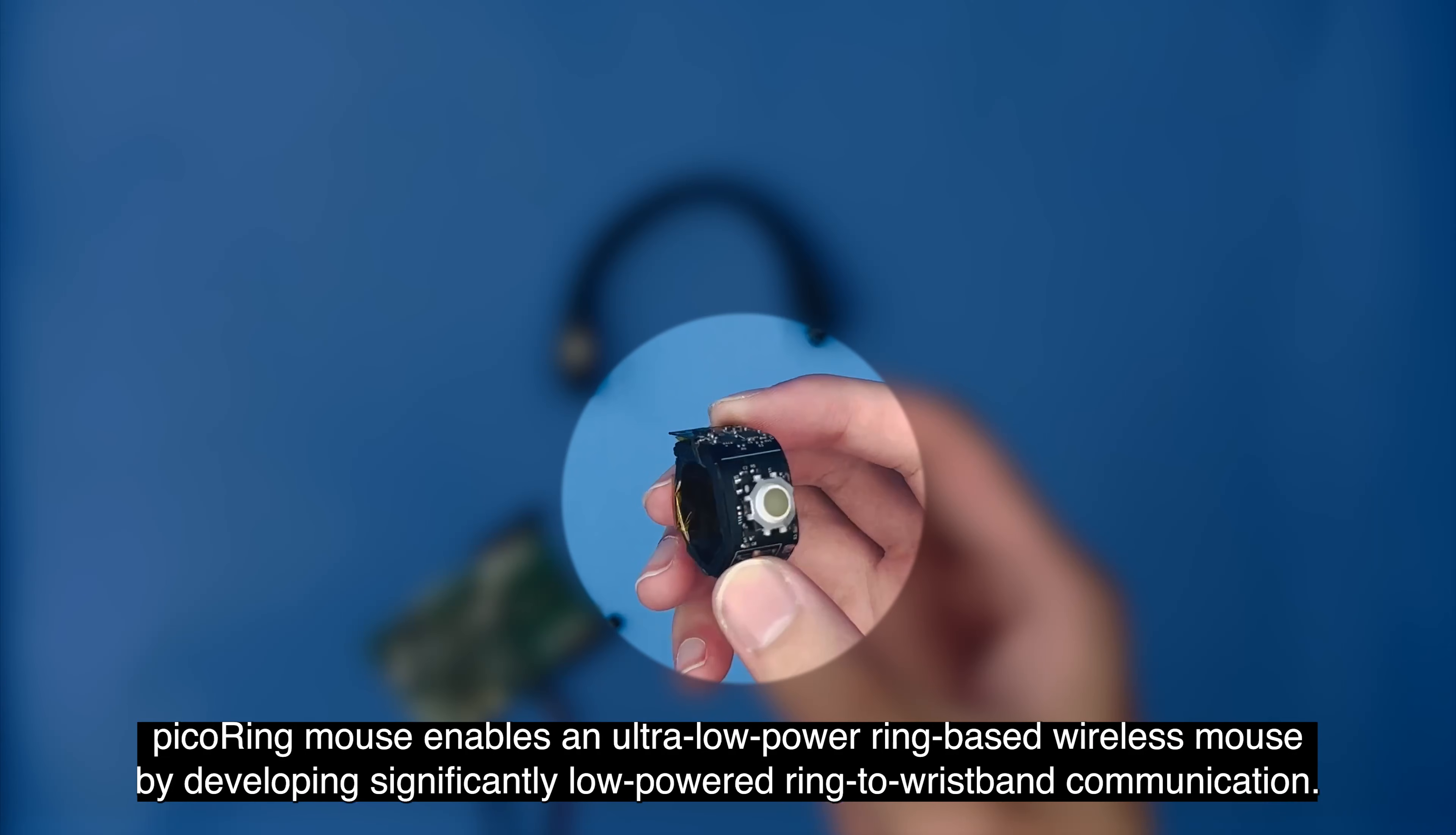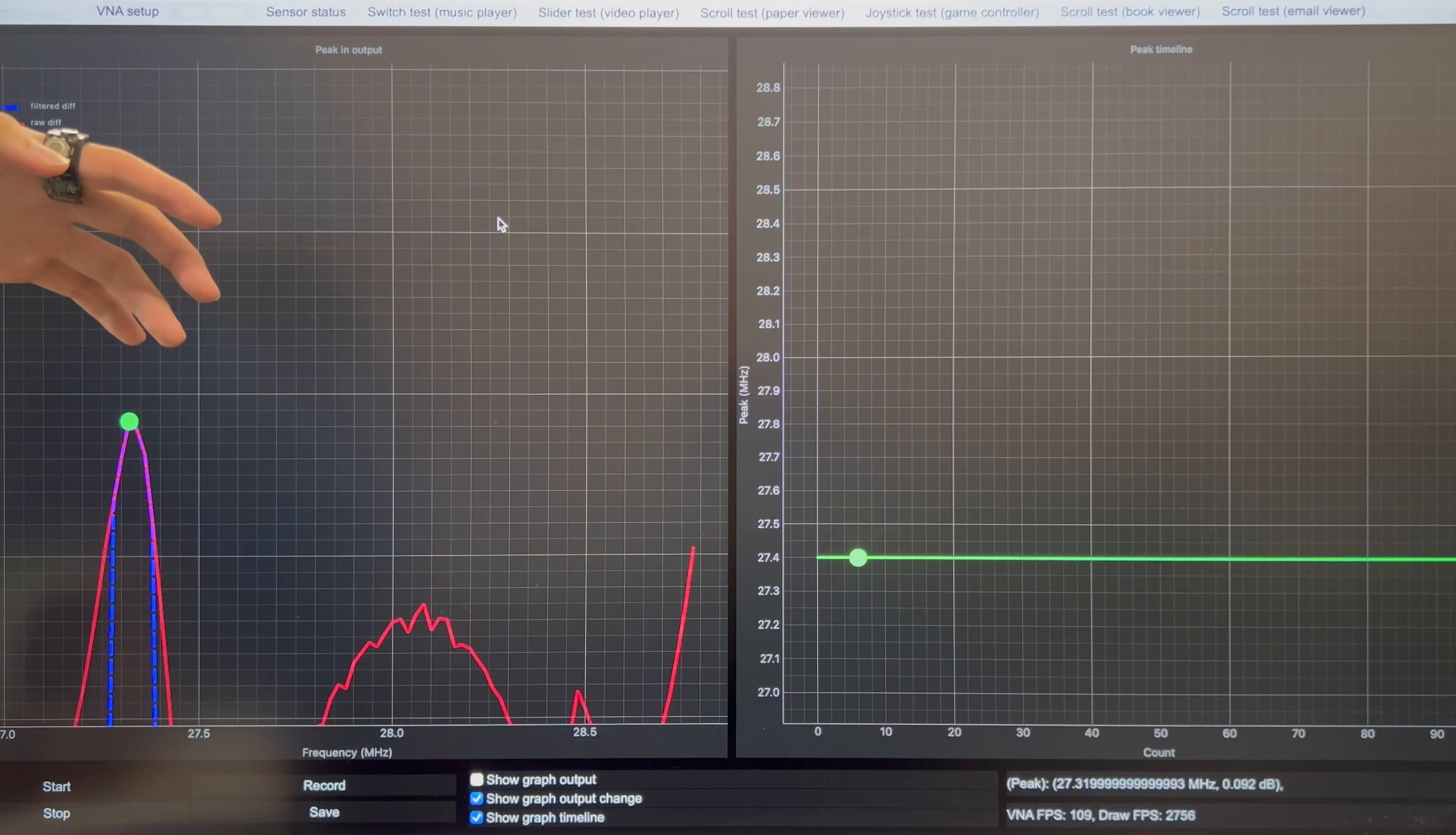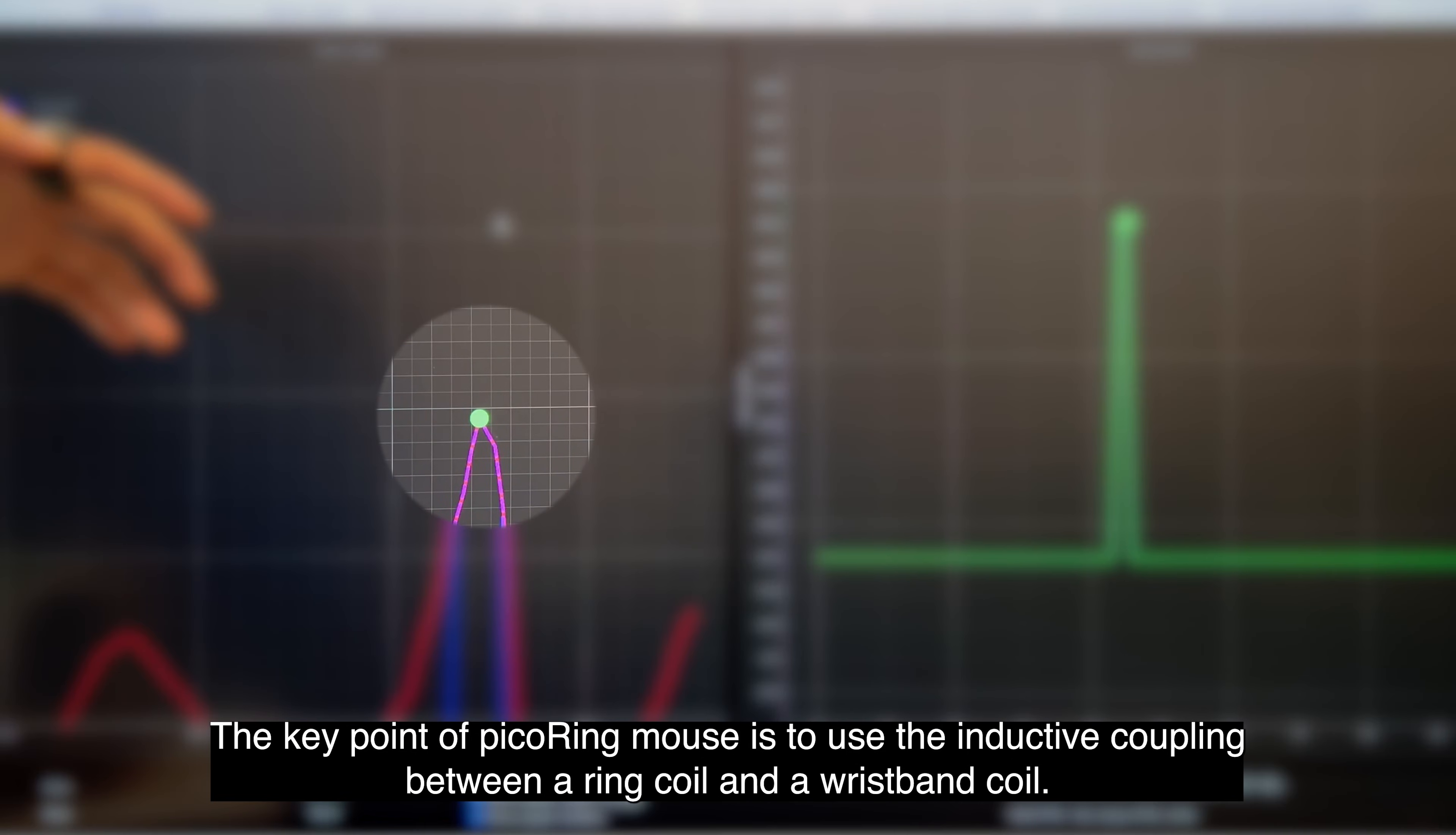Pico Ring Mouse enables an ultra-low power ring-based wireless mouse by developing significantly low-powered ring-to-wristband communication. The key point of Pico Ring Mouse is to use the inductive coupling between a ring coil and a wristband coil.